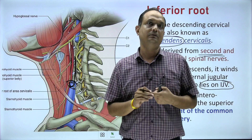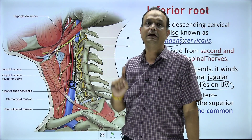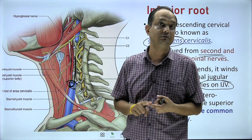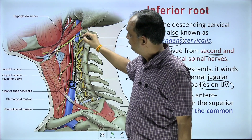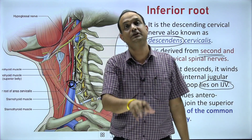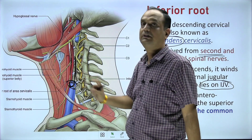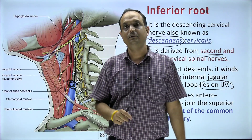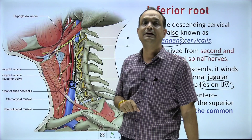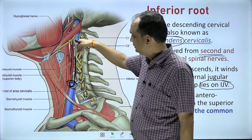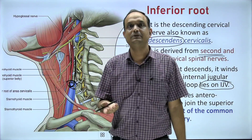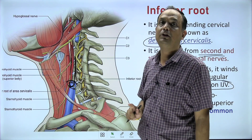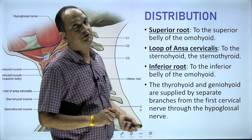To summarize the formation: the superior root looks like a descending branch of the hypoglossal nerve, but it is actually the fibers of C1 which entered into the sheath of the hypoglossal nerve. As the hypoglossal nerve reaches a certain point, the C1 fibers come out of its sheath and run vertically downward in front of the artery — that is the superior root of ansa cervicalis. The inferior root is a direct branch of the cervical plexus (descendens cervicalis), running on the anterior aspect of the internal jugular vein, and they meet in the lower part to form the loop of ansa cervicalis.